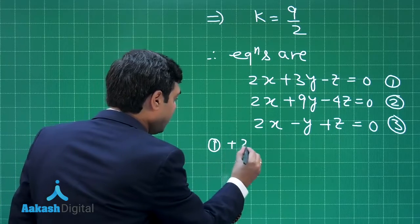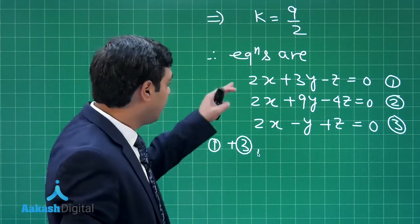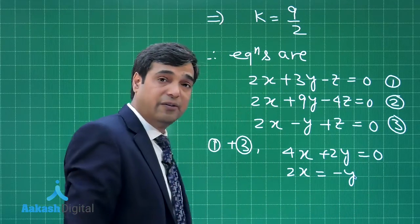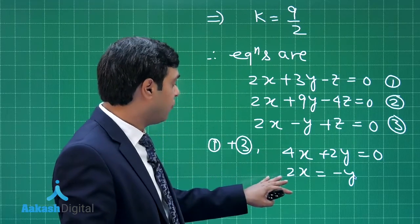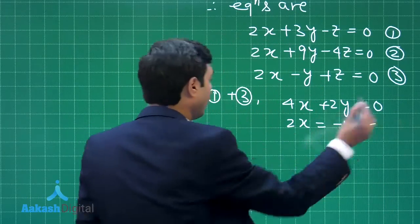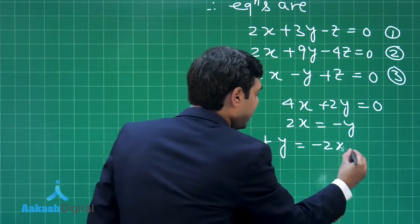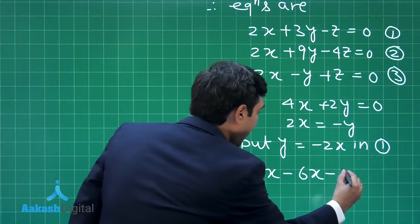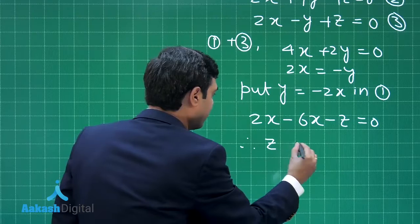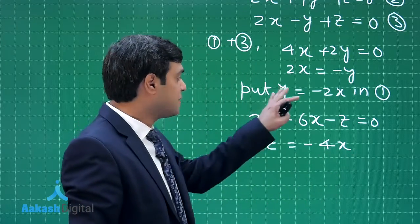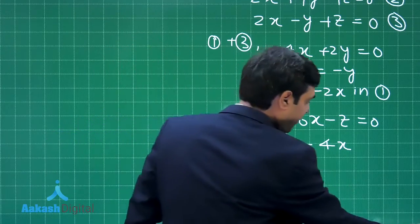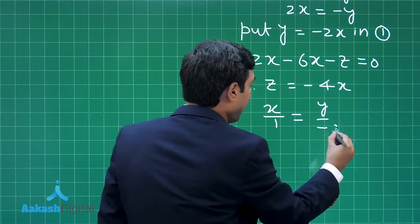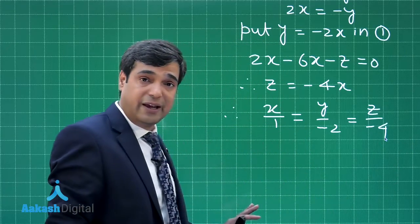Using equations 1 and 3: adding them, z cancels, giving 4x + 2y = 0, or y = −2x. Substituting y = −2x into equation 1: 2x − 6x − z = 0, so z = −4x. Therefore y = −2x and z = −4x, giving the relation x/1 = y/(−2) = z/(−4).